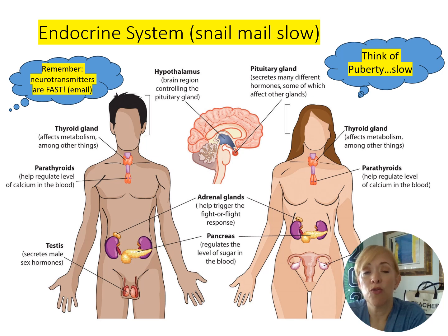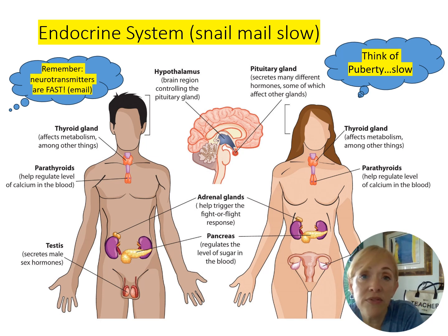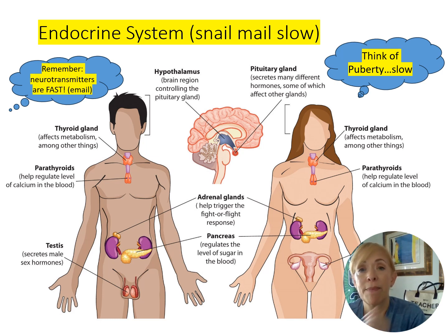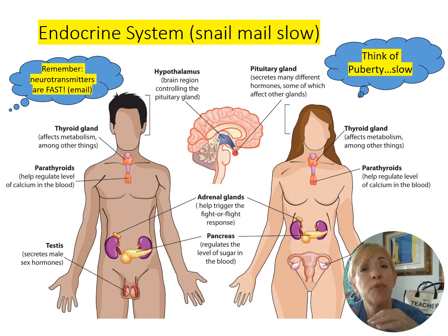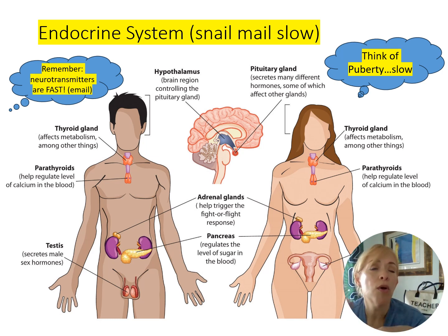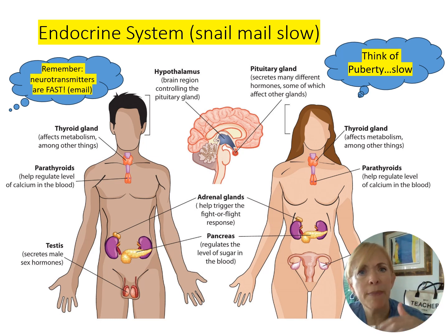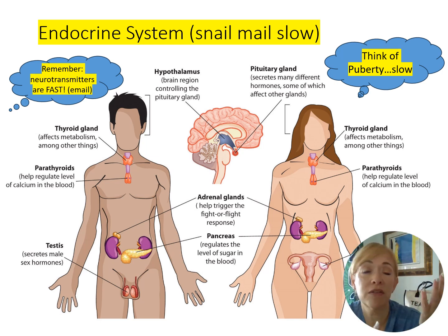There's a big difference between the nervous system and the endocrine system — one is very fast and one is very slow. Neurotransmissions passing from one neuron to the next are lightning fast. The endocrine system is very slow — think of puberty: it happens very gradually, you don't wake up one day completely changed. So the endocrine system acts slowly upon the body.